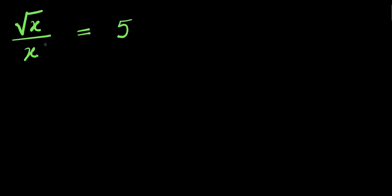Hello, we are going to solve this radical problem. We have square root of x divided by x equals 5. We are going to consider using two different methods, so let's start with the first one.